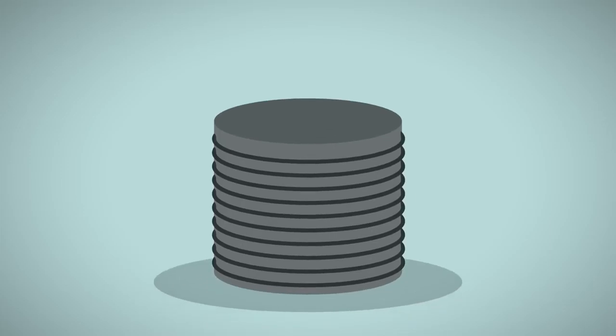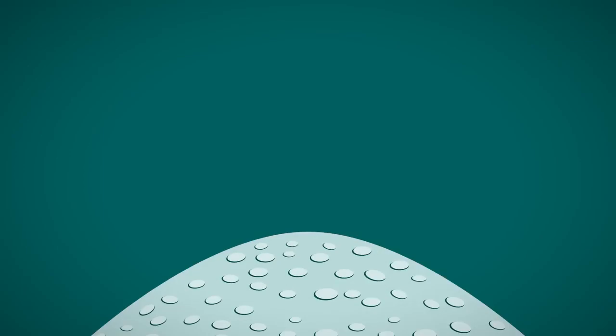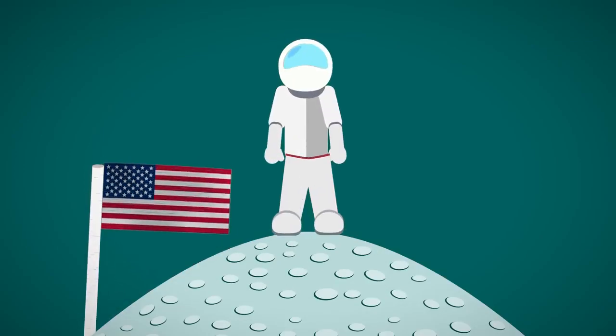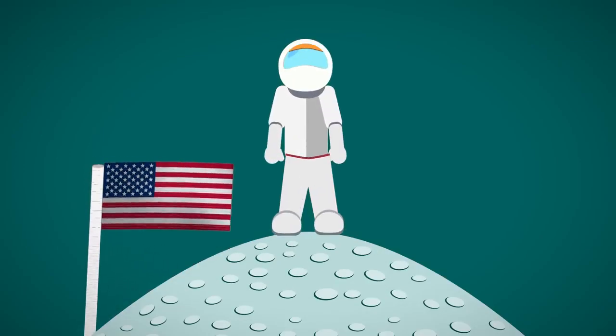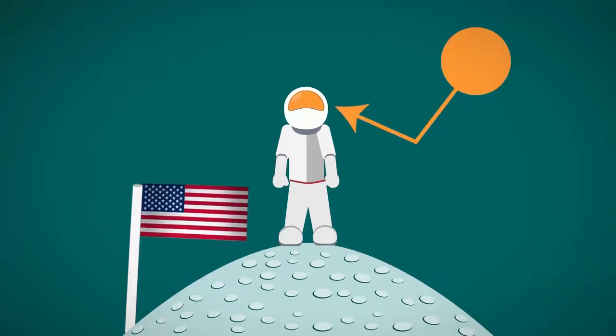Tin cans are actually made of steel but have a thin tin coating. Ed White, the astronaut who made the first American spacewalk in 1965, was wearing a gold-plated visor to protect his eyes from solar radiation.